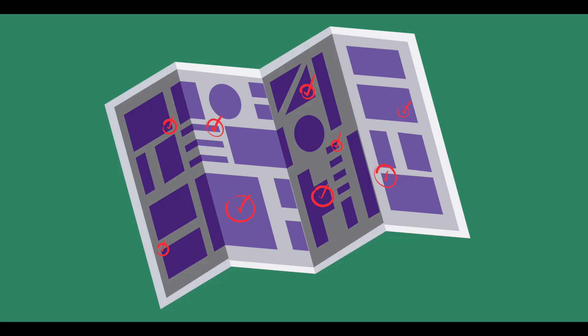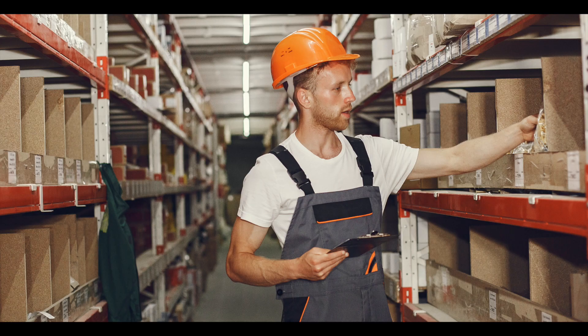Centralize inventory storage. Keeping track of where materials are in the facility is a key step to preventing excess waste of raw materials. That includes limiting the number of places that a material is stored, controlling access to those places, and limiting the active units of a material.